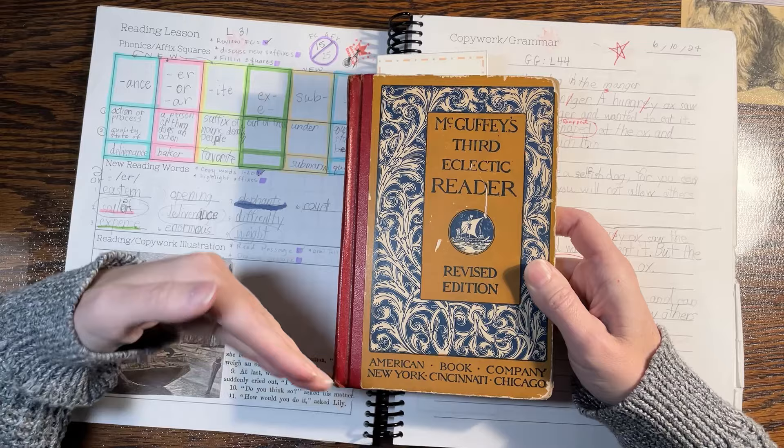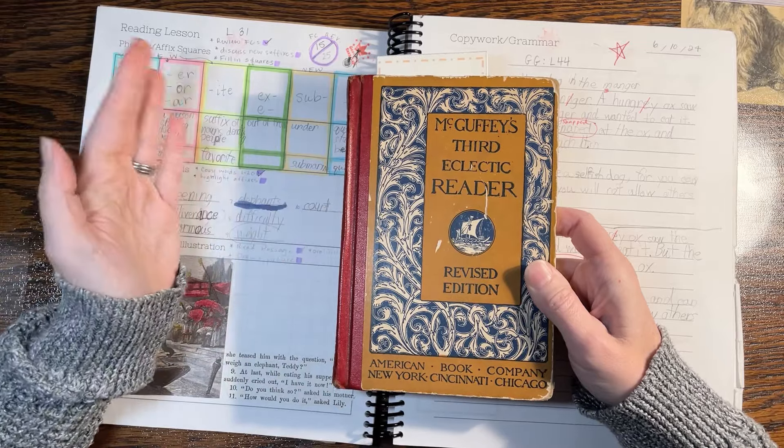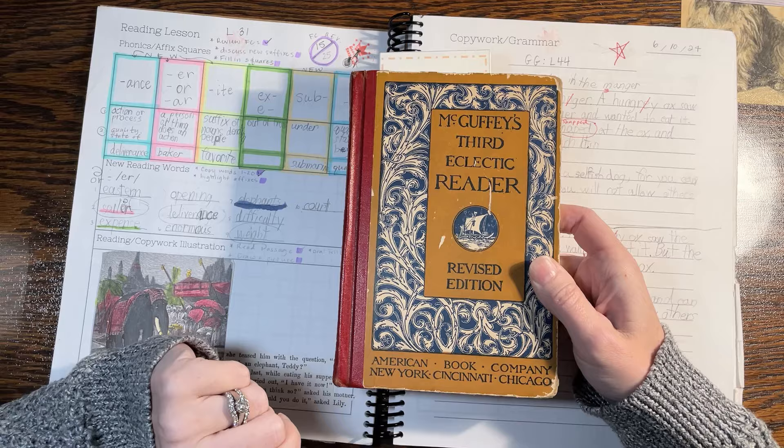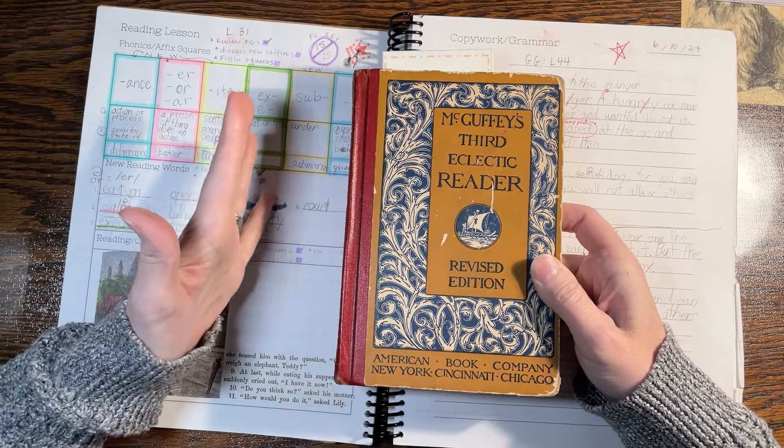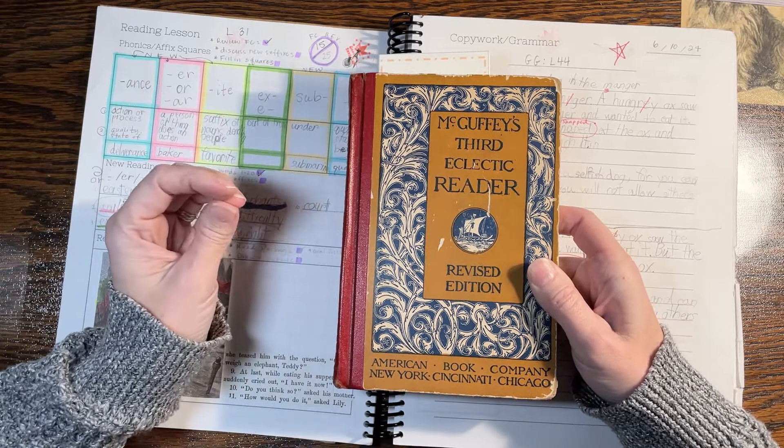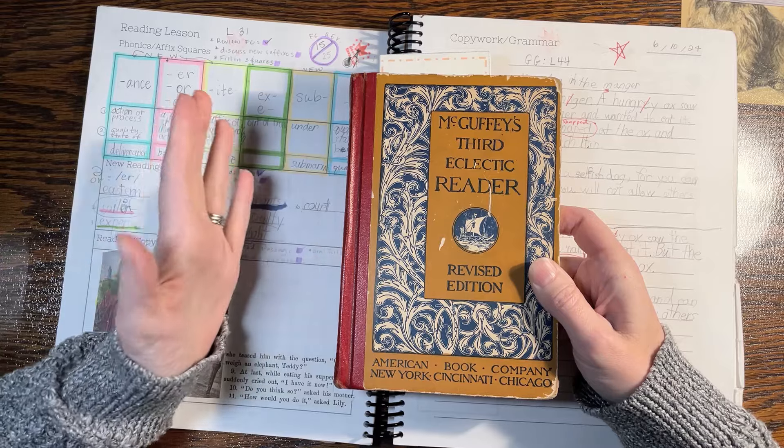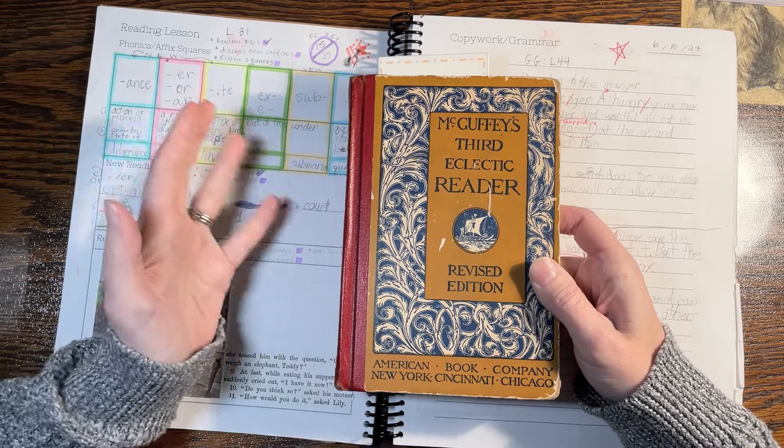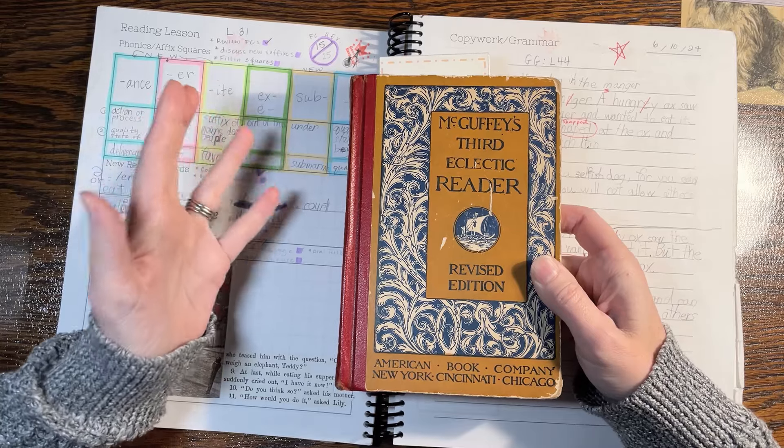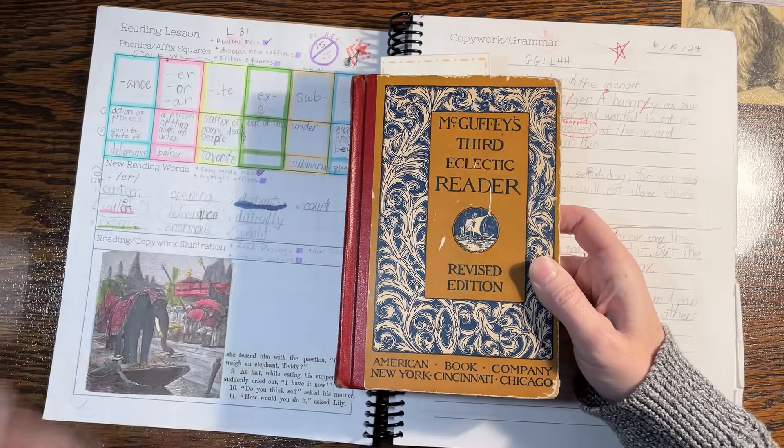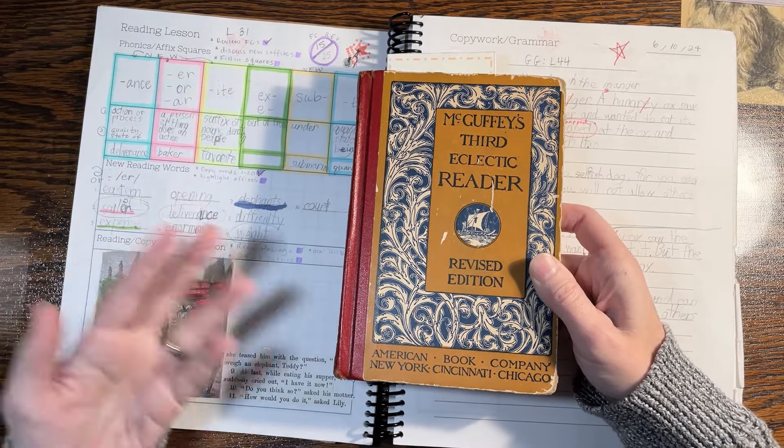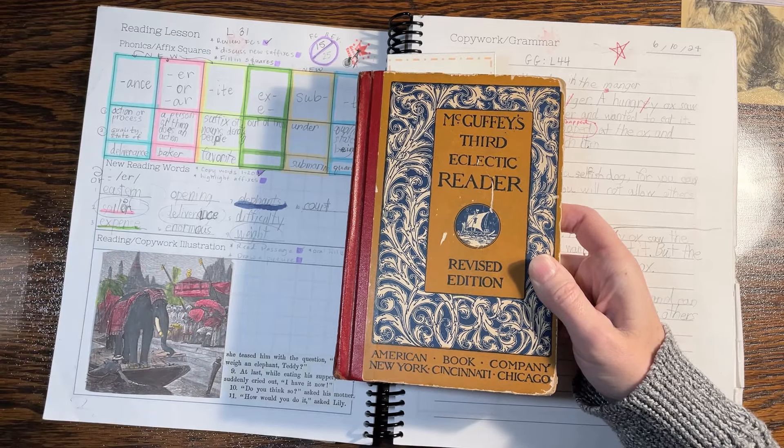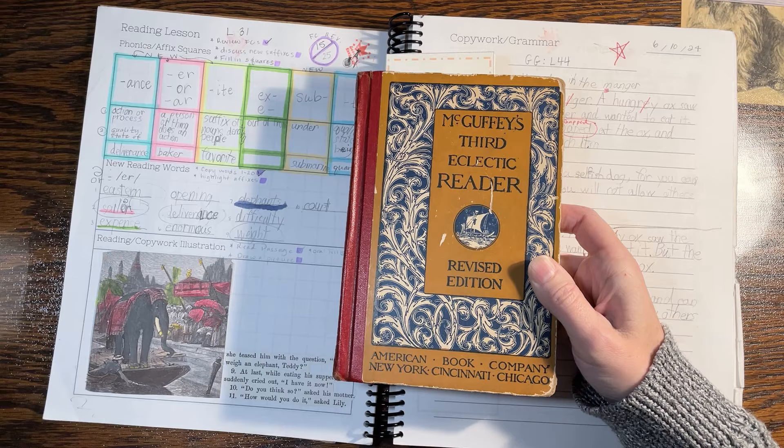Then about halfway through, it changes over to where at the end of the passage, the vocabulary words are pulled out and there's less of them. And they give you the definition and then where they're found in the passage. I just think these readers, I have still not come across, I look at everything. I look at every decodable text that I come across.